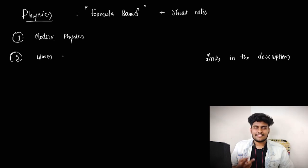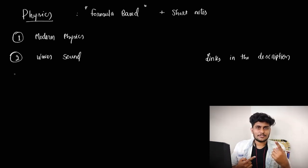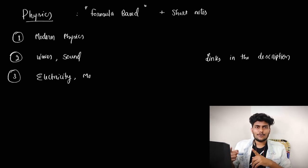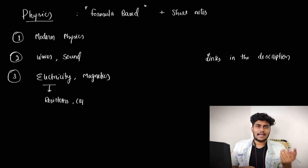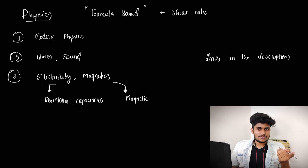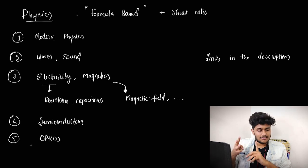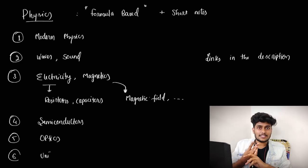In modern Physics, there are waves and sound — substitution type questions directly. Electricity, Magnetics: Current Electricity, Capacitors, Magnetic Moment. There are relations in modern Physics. Our preferred chapters are Semiconductors, Optics, Units and Measurements.